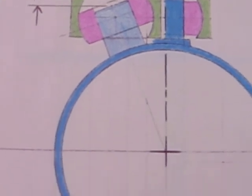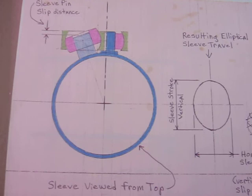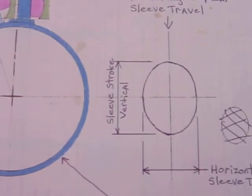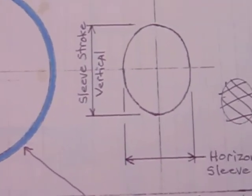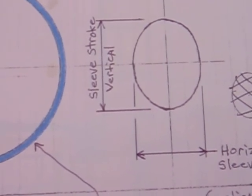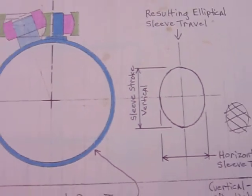And it results in a loss of motion so that you end up with an elliptical shape to the sleeve motion instead of perfectly circular. If there was no slip, it would be a circular motion, but there's always going to be slip.